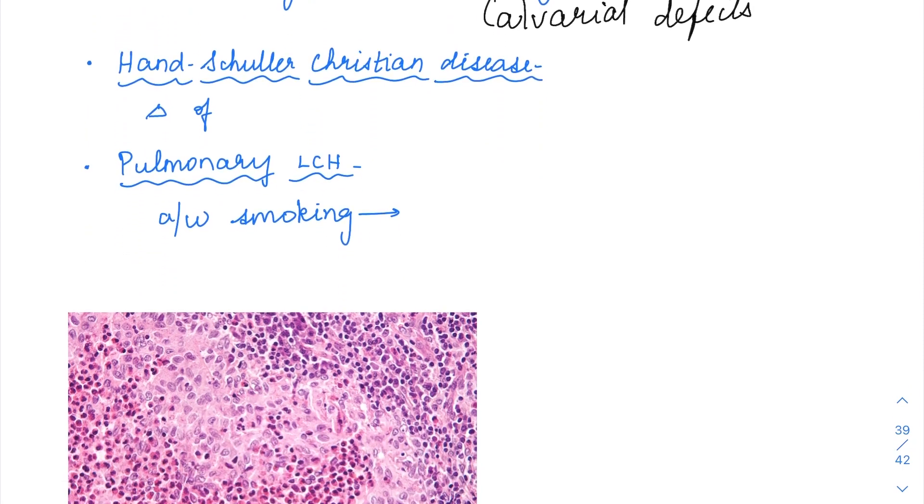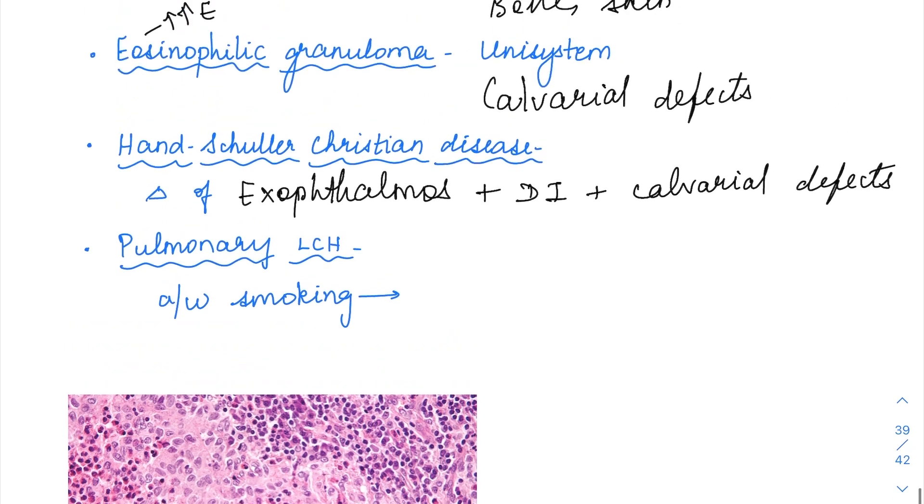Then comes the third form which is Hand-Schuller-Christian disease. Here it is going to be a triad of exophthalmos, eyes will be protruding with diabetes insipidus. The brain is going to be affected here and then there are going to be calvarial defects same as in eosinophilic granuloma. It is a triad. Hand-Schuller-Christian disease is a triad of exophthalmos, diabetes insipidus and then calvarial defects.